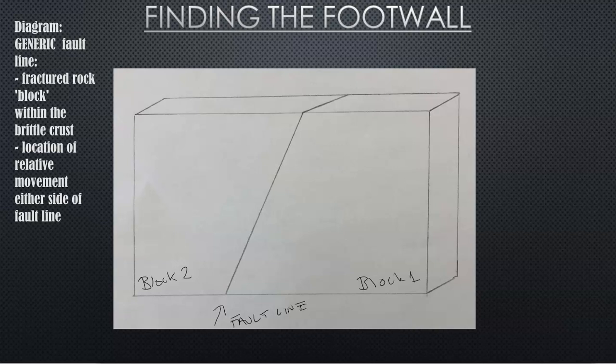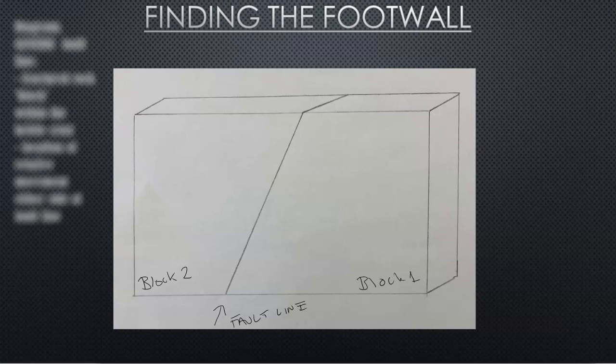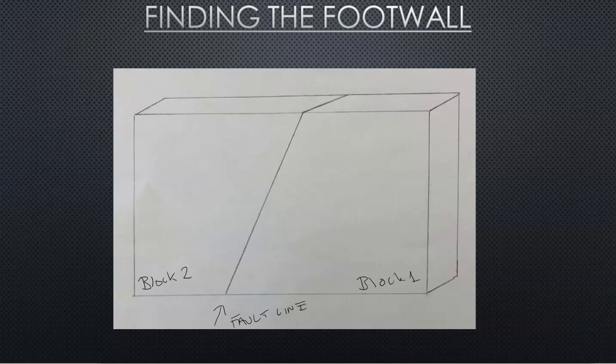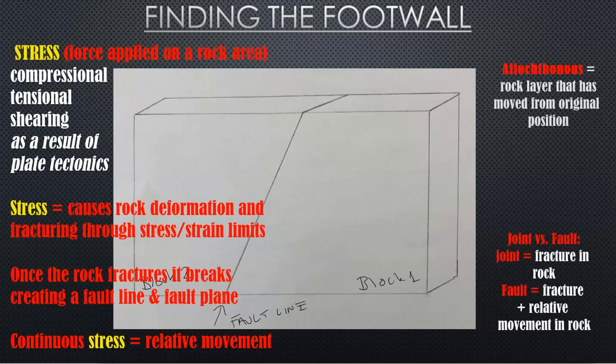Now to find the footwall as opposed to the hanging wall, footwall is what doesn't move. It's that stable, in place, original layer of rock. When we try and find the footwall versus the hanging wall, we're looking at the allocthonos, which is a Greek word which kind of derives from the sediment or rock that is in the starting place. It's figuring out which rock was there originally, which rock is moving.